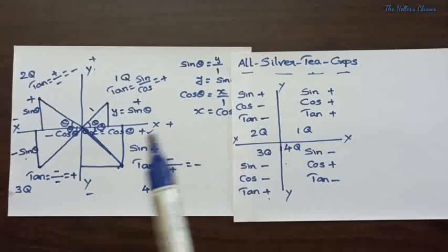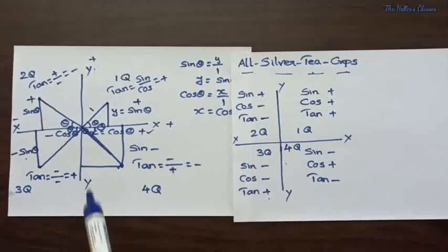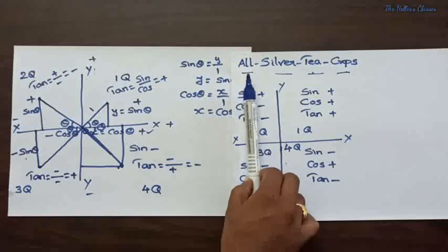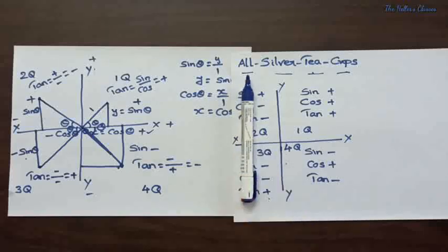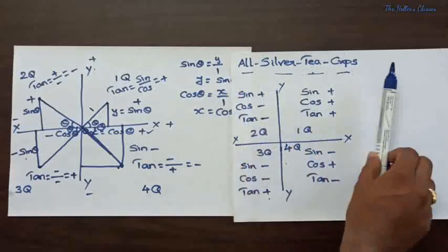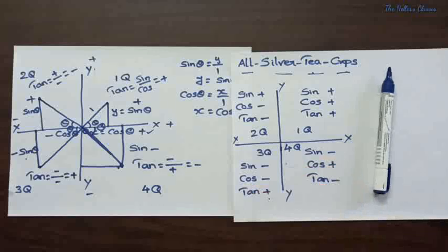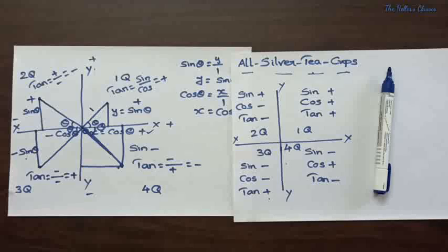This is the explanation for 'All Silver Tea Cups' — how it happens and how to remember these values. In the next video I will continue with sine 90 plus, sine 180 plus, and likewise continue with those topics. Thank you.